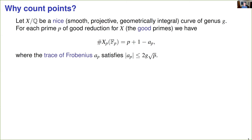Let X/Q be a nice smooth projective geometrically integral curve of genus g defined over the rational numbers. For each prime p of good reduction, all but finitely many of them, we can consider the reduced curve over fp and count points on it. The point count has the form p + 1 - ap, where ap is the trace of Frobenius, an integer whose absolute value is bounded by 2g√p.